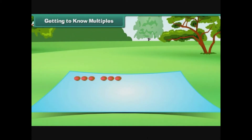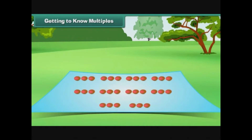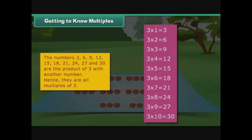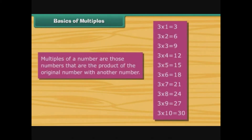Miss Rita points to a student. He recalls in his mind that three ones are three, and places three pebbles on the hanky in front of him. Miss Rita points to another student. She recalls that three twos are six, and places six pebbles on the hanky in front of her. This process is repeated till the tenth student places 30 pebbles on the hanky. The numbers three, six, nine, twelve, fifteen, eighteen, twenty-one, twenty-four, twenty-seven and thirty are the product of three with another number.